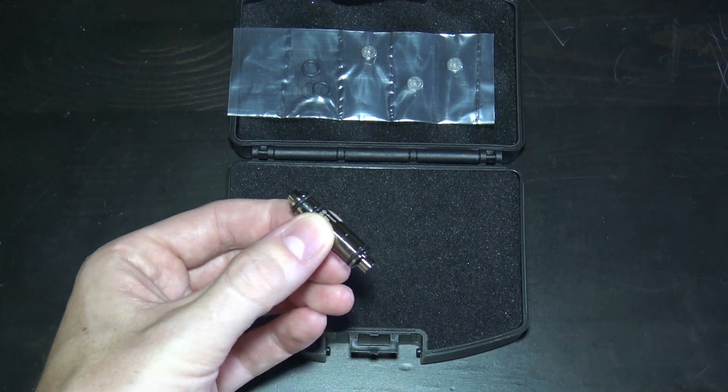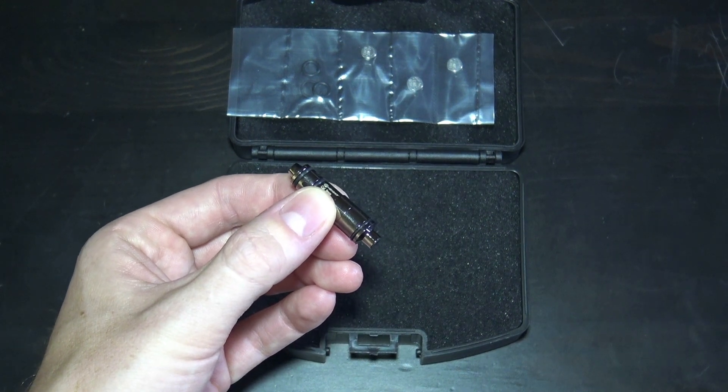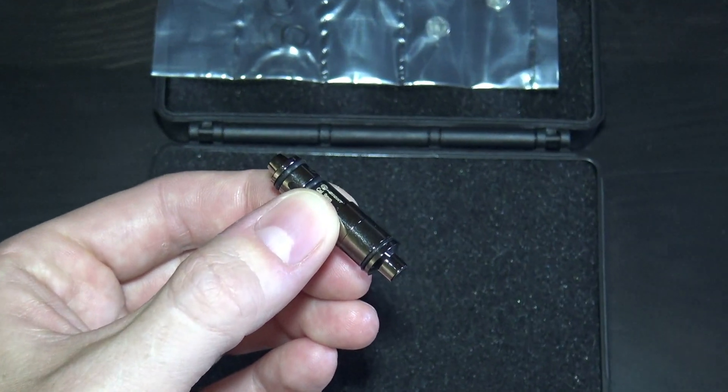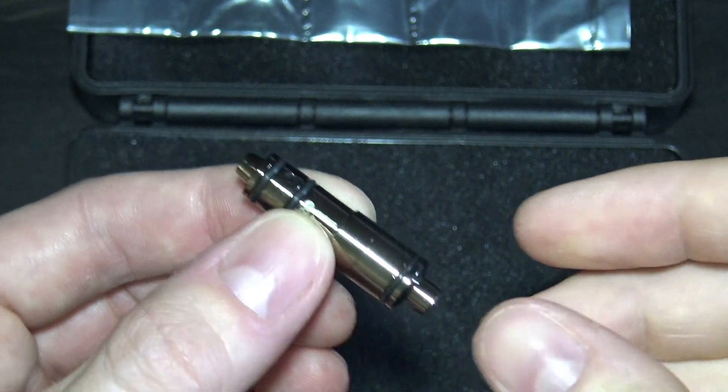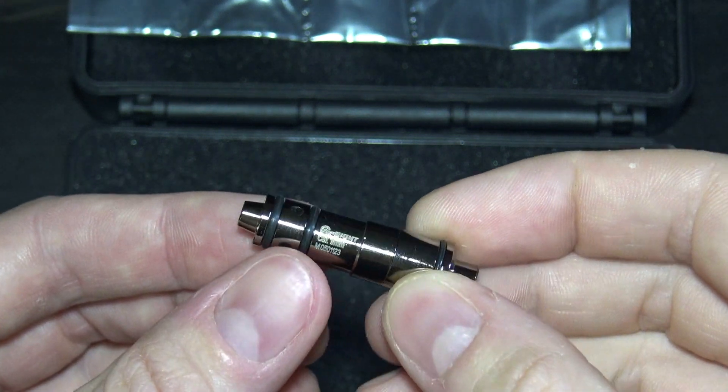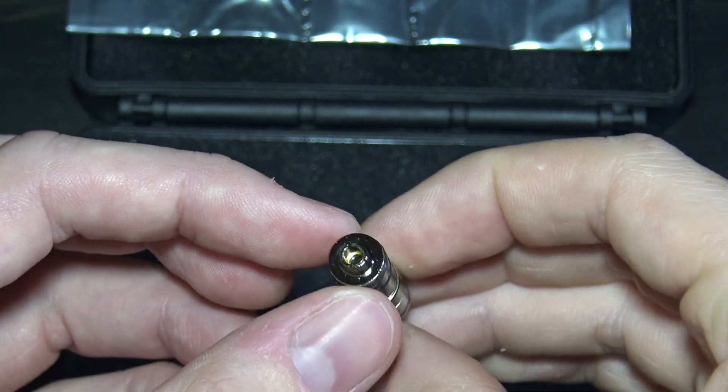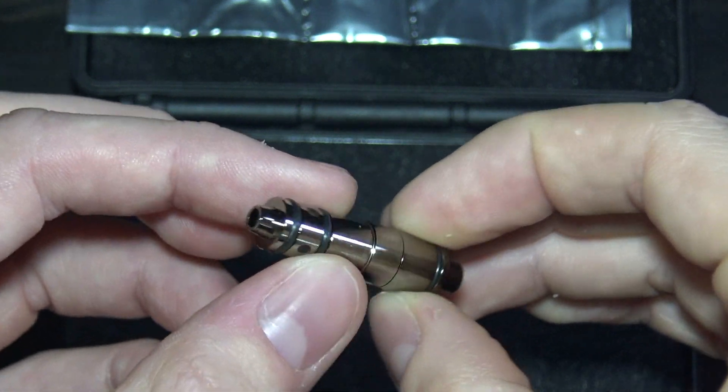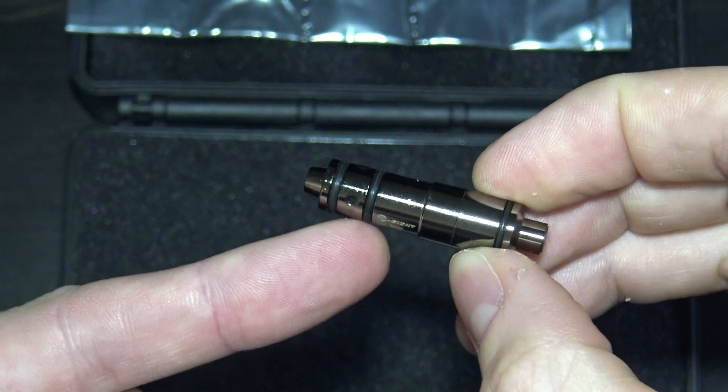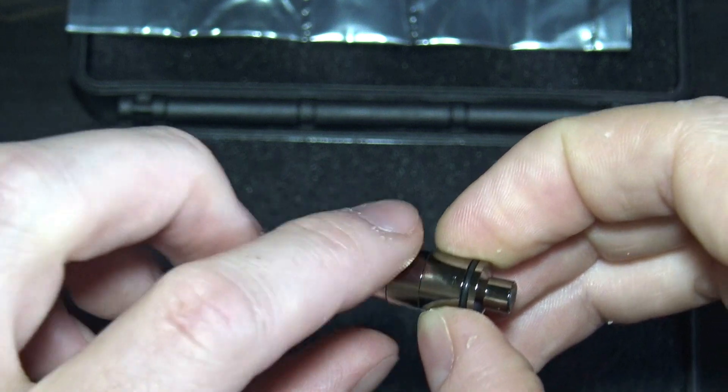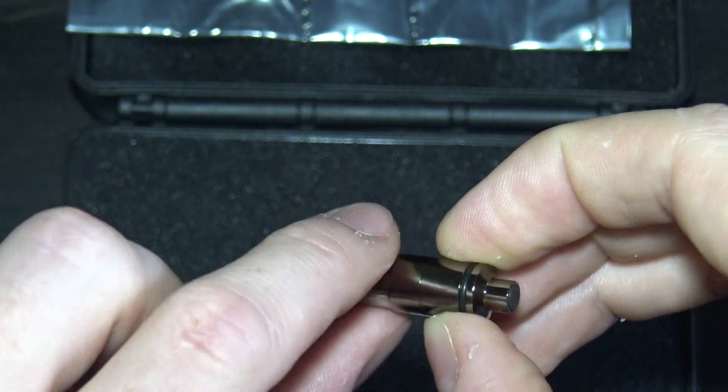Let me zoom in on that for you. This is the 9mm edition. That's where the laser comes out. You can see those O-rings we were talking about earlier, right along here.